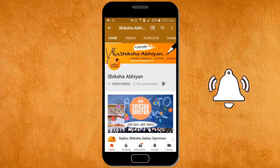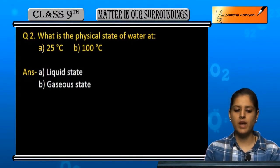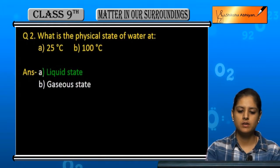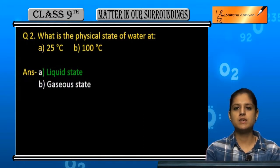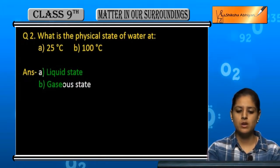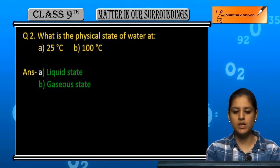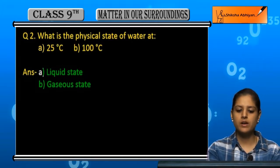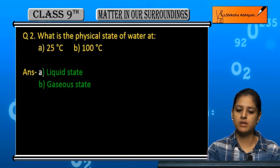Question number two: What is the physical state of water at 25 degrees Celsius and 100 degrees Celsius? At 25 degrees Celsius, water always remains in the liquid state. At 100 degrees Celsius, it remains in the gaseous state.